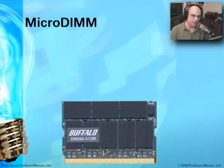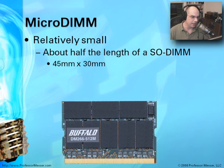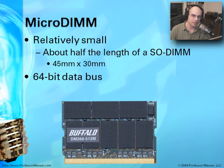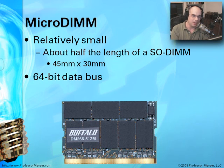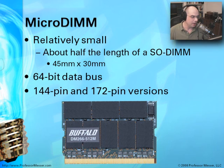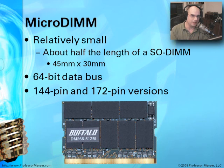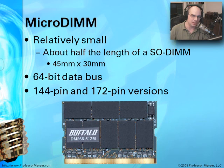Another common, very small type of memory module is something called a Micro-DIMM, which is even smaller than a SO-DIMM — about half the length. It also has a 64-bit bus, so it's used in some of the more modern portable devices. Because it is very small, you'll see this used in portable devices that aren't even personal computers — they may be MP3 players or very tiny laptop computers. There are 144-pin and 172-pin versions of this.